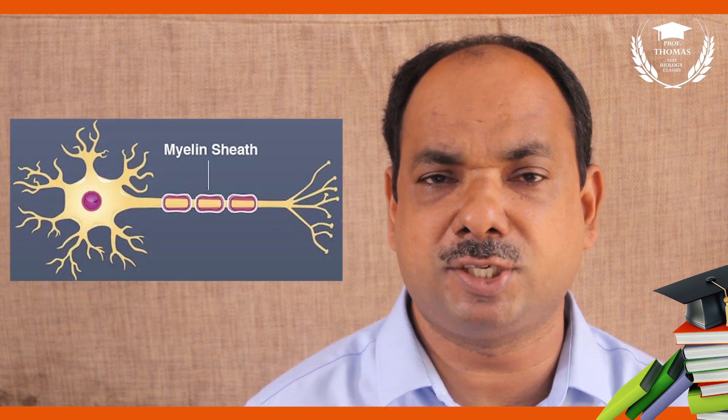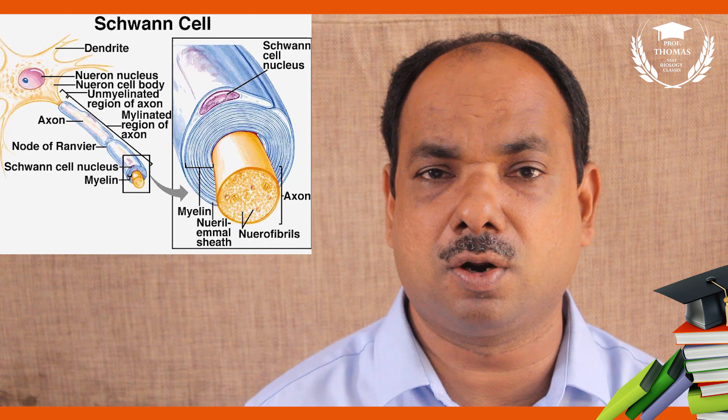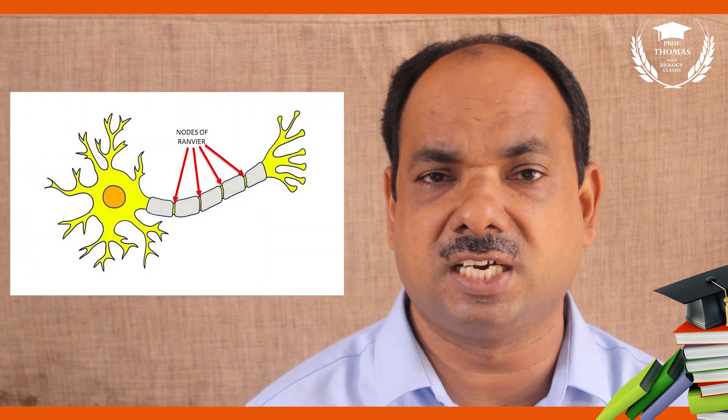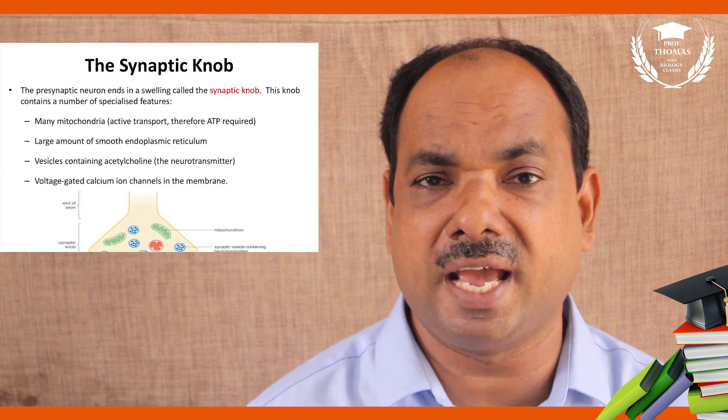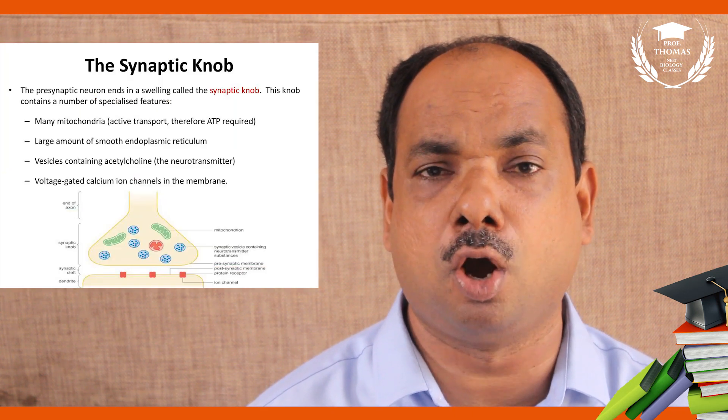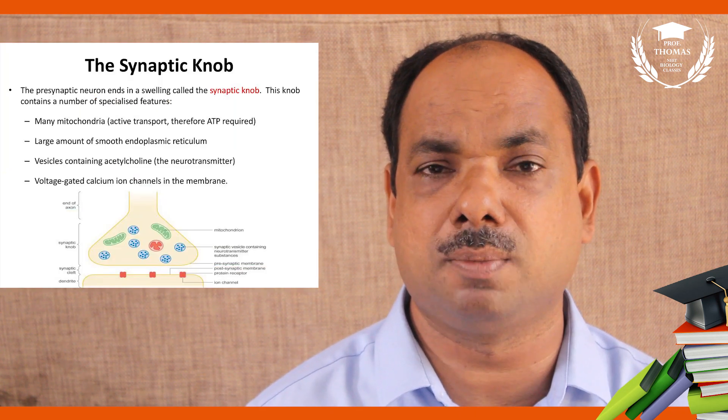The neuron is the longest cell and its function is conduction of nerve impulse. The myelin sheath is covered by Schwann cells in the peripheral nervous system, while oligodendrocytes produce myelin sheath in the CNS. The myelin sheath is broken at certain points called nodes of Ranvier. The axon divides to form axonites, ending in a knob-like structure called the synaptic knob or bouton terminaux.